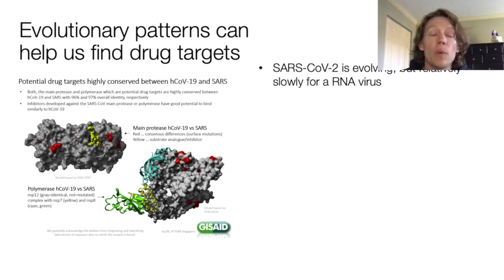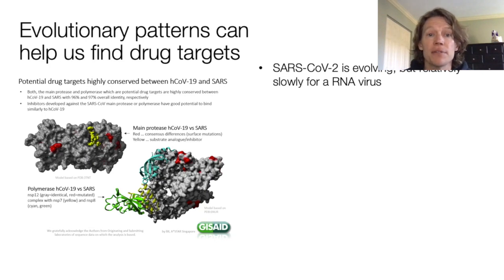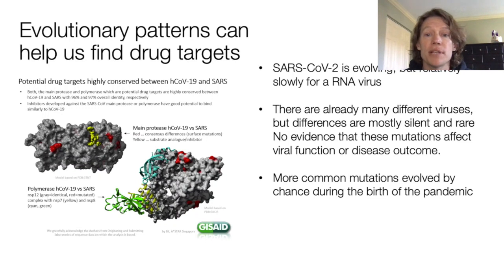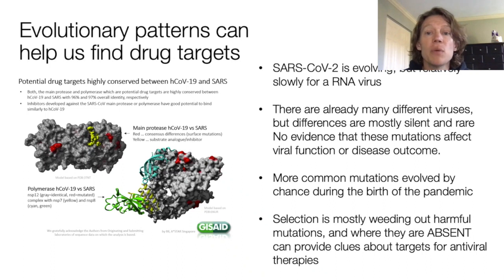Overall, we've learned that SARS-CoV-2 is evolving, but it's doing so relatively slowly for an RNA virus. There are already many different viruses, but the differences are mostly silent and rare. There's no evidence that these differences affect viral function or disease outcome. The more common mutations evolved by chance during the birth of the pandemic. And selection is mostly weeding out harmful mutations — and where mutations are absent, this can provide clues about targets for antiviral therapies.